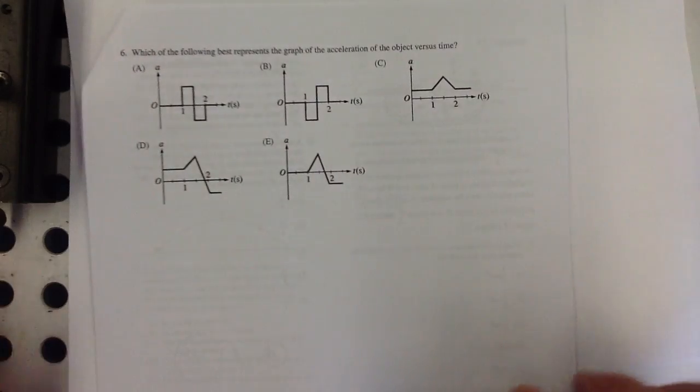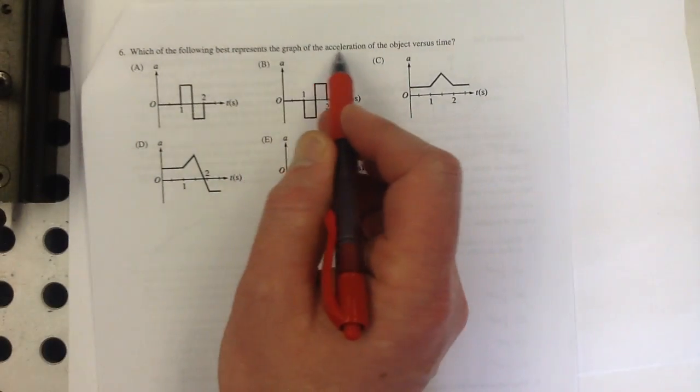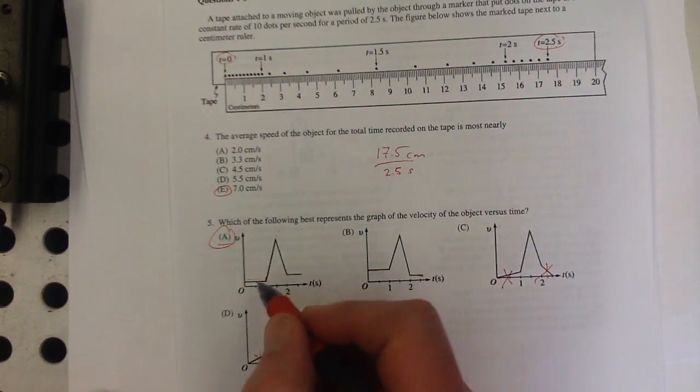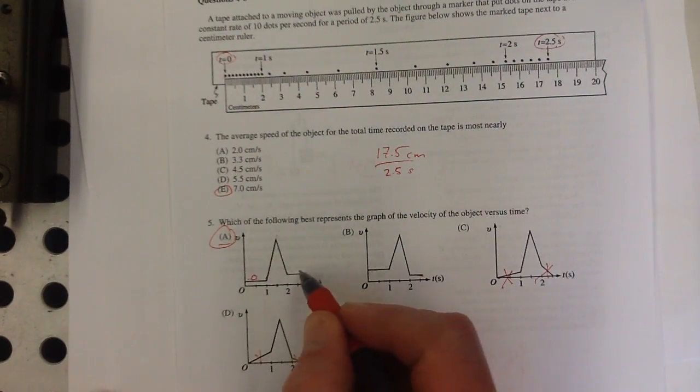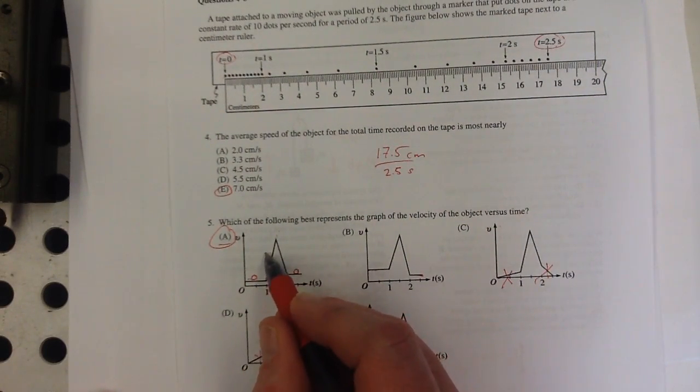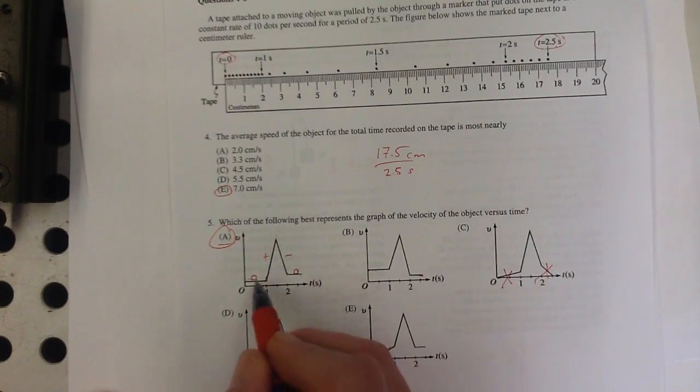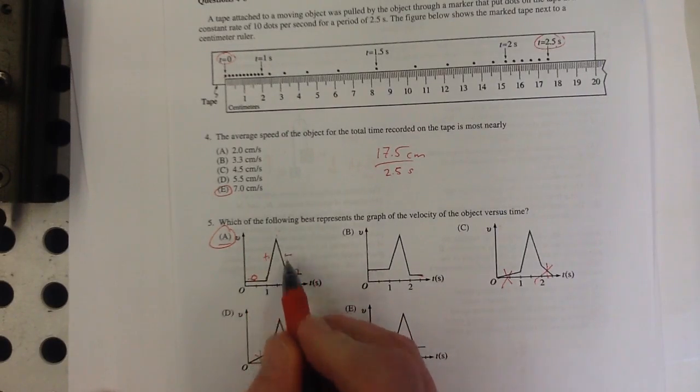Number six. Which of the following best represents the graph of the acceleration? Well, let's go back to this for a second. That's the slope of this. So acceleration is zero here, zero here, positive, negative. So the step function is going to be zero, positive, negative, and then zero.